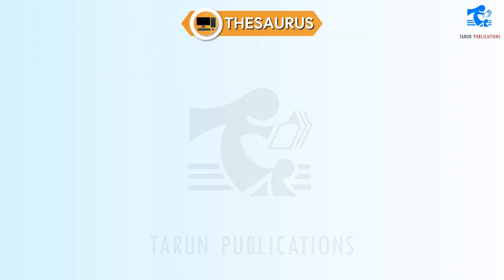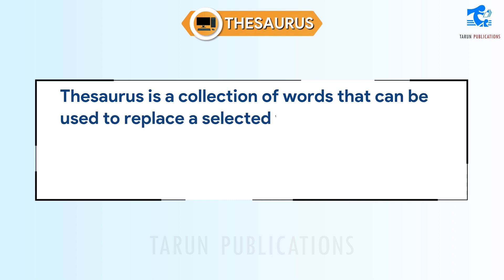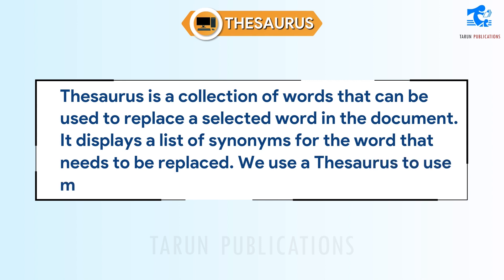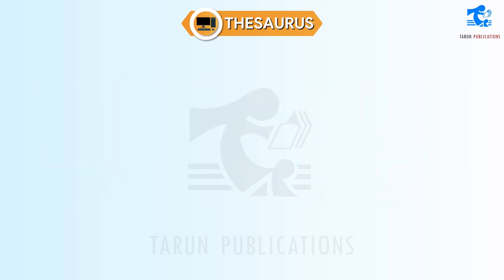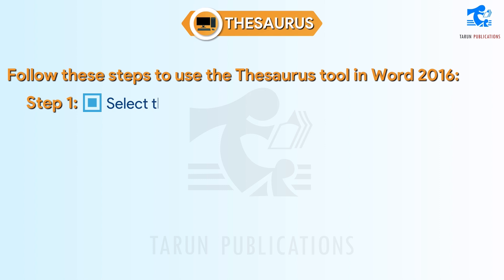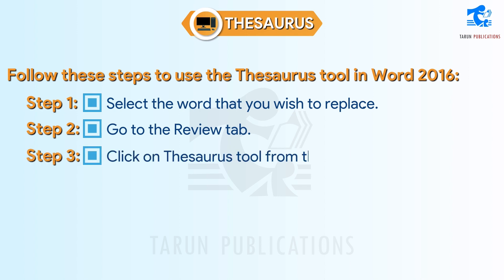Thesaurus. A thesaurus is a collection of words that can be used to replace a selected word in the document. It displays a list of synonyms for the word that needs to be replaced. We use a thesaurus to use more suitable words in our document. Follow these steps to use the thesaurus tool in Word 2016. Step 1: Select the word that you wish to replace. Step 2: Go to the Review tab. Step 3: Click on the Thesaurus tool from the Proofing group.